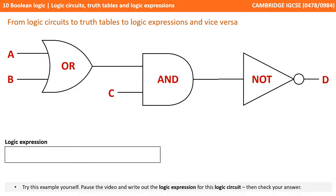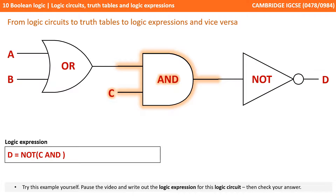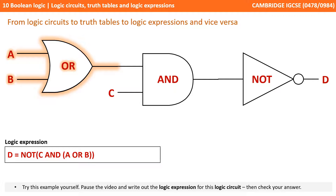Now it's time for you to have a go yourself. Pause the video and write out the logic expression for the logic circuit shown. Working backwards from the output: D equals NOT C AND (A OR B). You might also write this as NOT (A OR B) AND C — both expressions mean exactly the same thing.